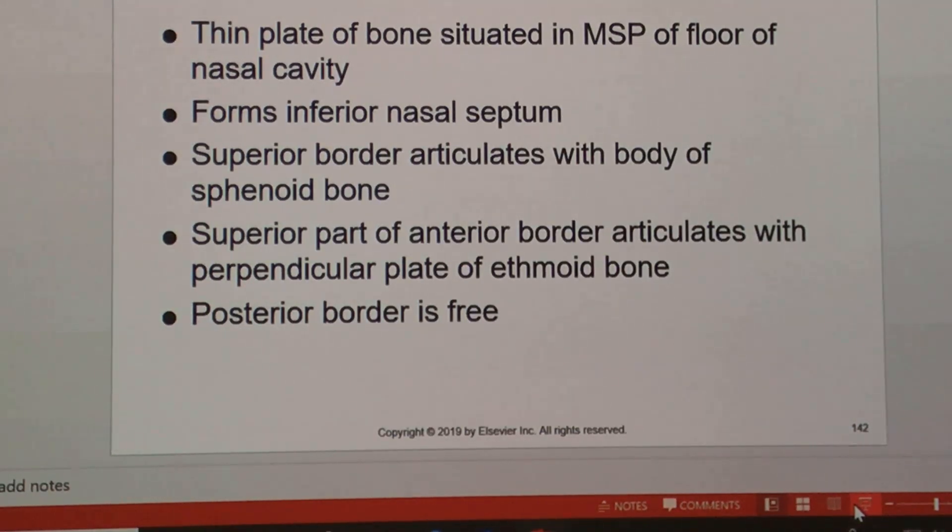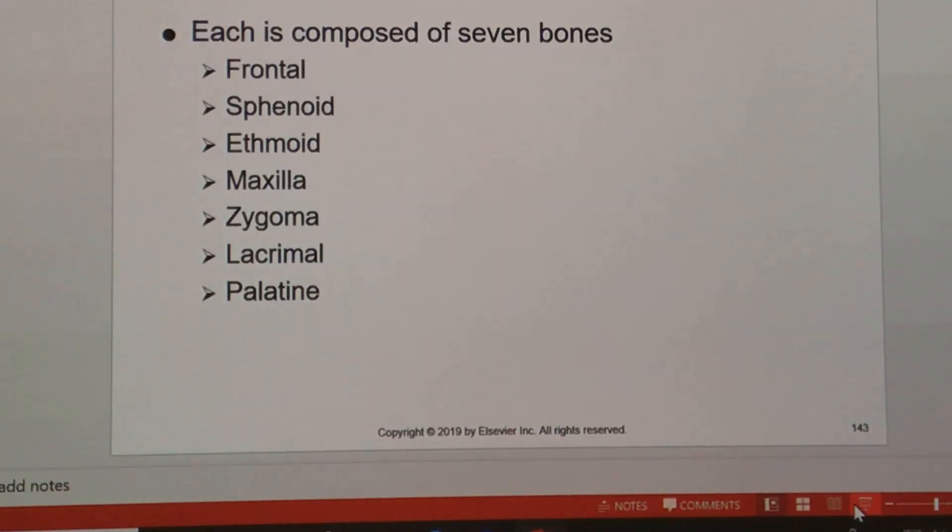We're going to go ahead and talk about the orbits. The orbit is composed of seven bones, and those are all the bones that make up the orbit.